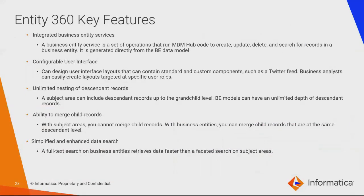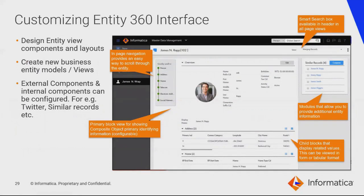Here are the key features of Entity 360: it offers integrated business entity services, a configurable UI, unlimited nesting of descendant records, the ability to merge child records at the same descendant level, and both simplified and enhanced data search. A lot of customization can be done at the E360 UI — external components can also be configured. You have smart search modules, a primary block view that can expand to show child blocks, and in-page navigation through pills to scroll to specific entities.